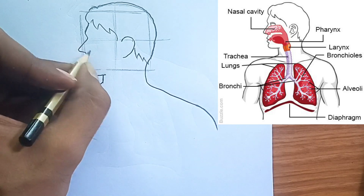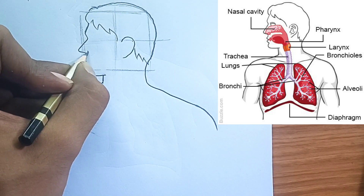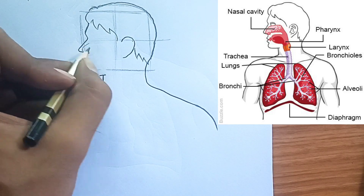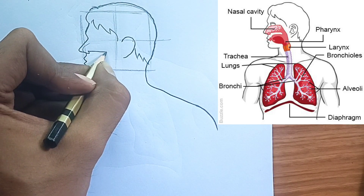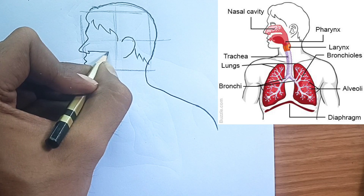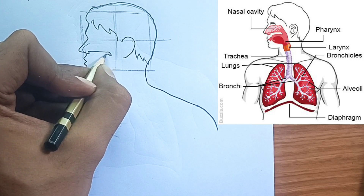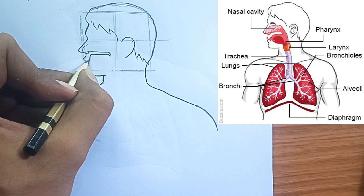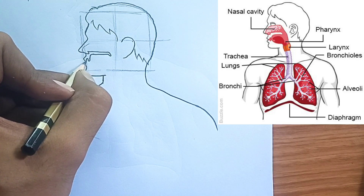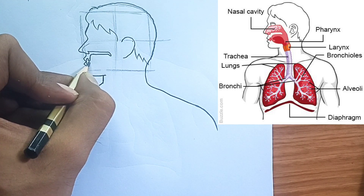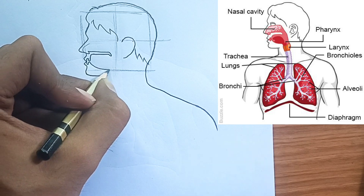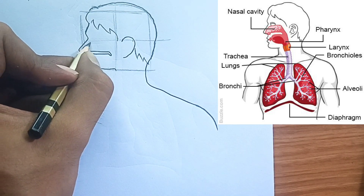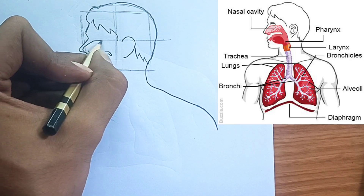Bronchi: The trachea then branches into two main tubes called bronchi, one for each lung. These bronchi further subdivide into smaller and smaller tubes within the lungs, like the branches of a tree. These smaller tubes are called bronchioles.